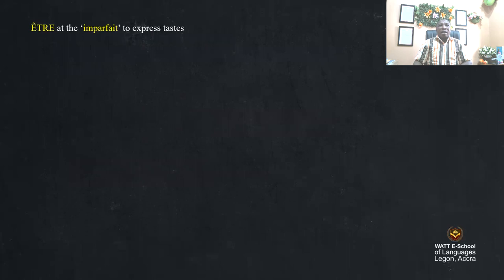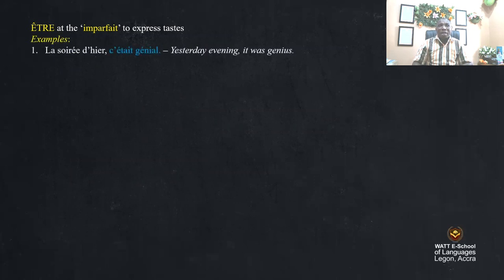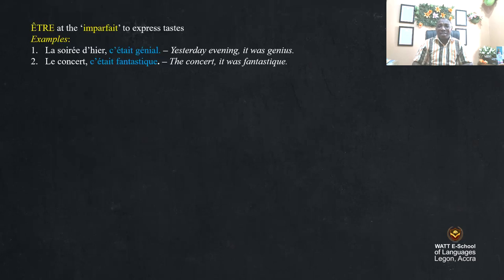Using 'être' at the imperfect and perfect to express taste. Example: 'La soirée d'hier, c'était génial' — yesterday's evening, it was great. 'Le concert, c'était fantastique' — the concert, it was fantastic.